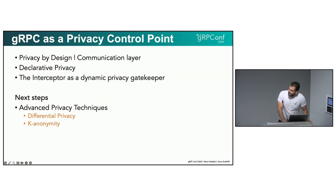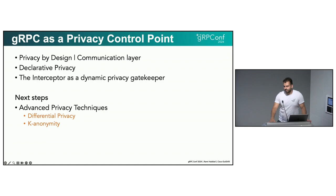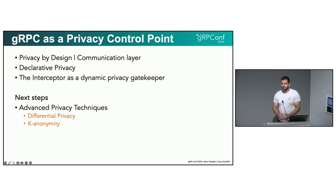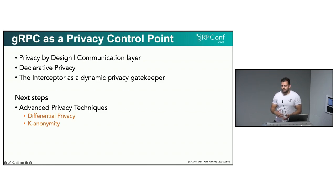The end goal is, if we can introduce privacy by design into gRPC without too much delay or overhead — especially given that gRPC is at the root of data exchange — and if we can introduce declarative privacy by simplifying it so that development teams no longer have to come up with their own implementation, we can safeguard against errors. We introduce the concept of the interceptor as a dynamic privacy gatekeeper that can be used easily.